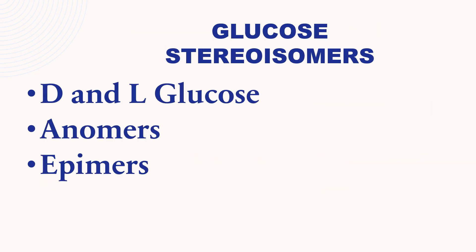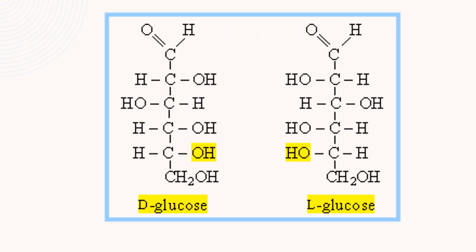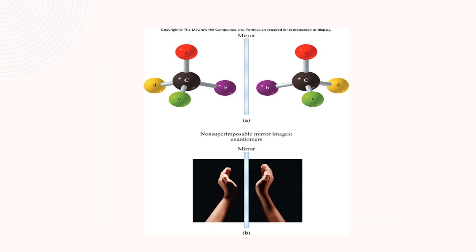Glucose stereoisomers. There are three different types: D and L-glucose, anomers of glucose, and epimers of glucose. This is D-glucose and this is L-glucose. The only change is in the OH group at the C-5 position of glucose. This is a mirror image — they are non-superimposable mirror images, known as enantiomers.